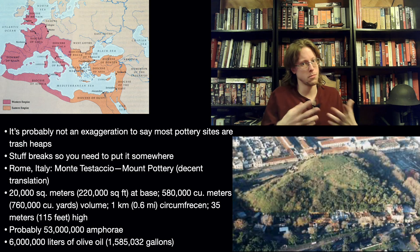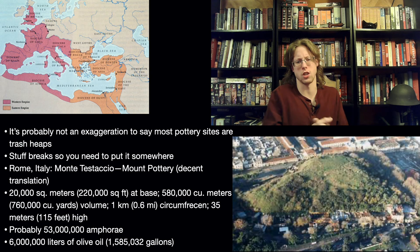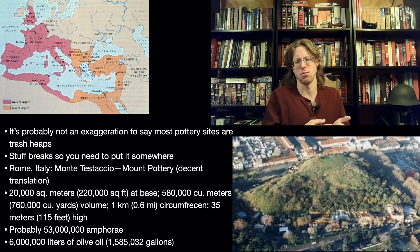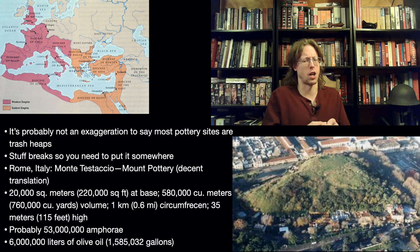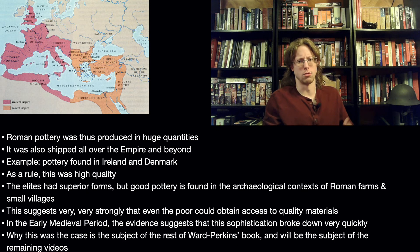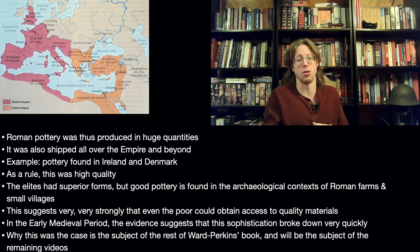These are the jugs — the pottery jugs, the vessels in which you store olive oil or wine, et cetera, for transport. It's estimated that in terms of volume, there are about six million liters of olive oil that could be held in this pit if you were to reconstruct everything. So this is a massive amount of pottery, which means it had to be made, and the stuff it held had to come from somewhere. This suggests the Roman economy was extraordinarily complex for the ancient world. Roman pottery was thus produced in high quantities.